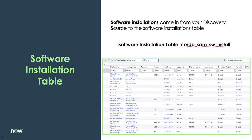To take a step back and remind everybody — software installations come from your discovery sources, and those discovery sources should be moving those software installations into the software installation table. The software installation table is here; it's cmdb_sam_sw_install. From here you're able to see all your software installations and run reports.